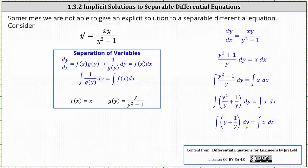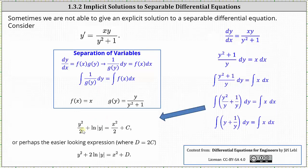The integral of y with respect to y is y squared divided by two, plus the integral of one divided by y, which is equal to the natural log of the absolute value of y, plus a constant, which we'll include on the right. On the right, the integral of x with respect to x is equal to x squared divided by two plus a constant c. So we have y squared divided by two plus natural log of the absolute value of y equals x squared divided by two plus c.